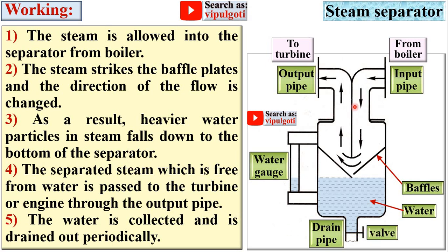Now let us see the animation of the steam separator. The steam is allowed into the separator from the boiler through this input pipe. Here the steam is in wet condition, meaning the steam contains moisture particles. Due to the baffles, the water particles are collected at the bottommost part of the vessel, and then only the steam without water particles flows through this output pipe and is supplied to the turbine.